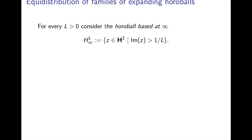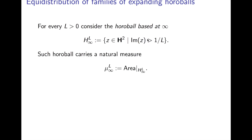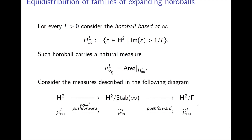That way we get a measure keeping track of how these horoballs wrap around our surface. For every positive L, the horoball based at infinity is all points in the upper half space whose imaginary part is above 1/L. That horoball carries a natural measure — just the area restricted to it. The procedure is described in the following diagram: I have my horoball measure on H², I take a local push-forward to H² mod the stabilizer at infinity (quotienting out z maps to z+1), and after that I push forward down to H² mod gamma, giving a finite measure that keeps track of how horoballs wrap around the modular surface.